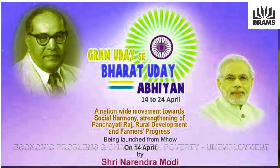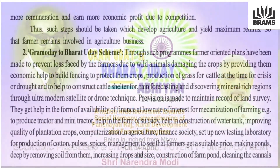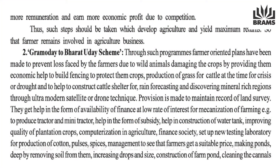Through such programs, farmer-oriented plans have been made to prevent losses faced by farmers due to wild animals damaging crops, by providing them economic help to build fencing to protect their crops. Plans also include production of grass for cattle during crisis or drought, help to construct cattle shelters, rain forecasting, and discovering mineral-rich regions through ultra-modern satellite or drone techniques.